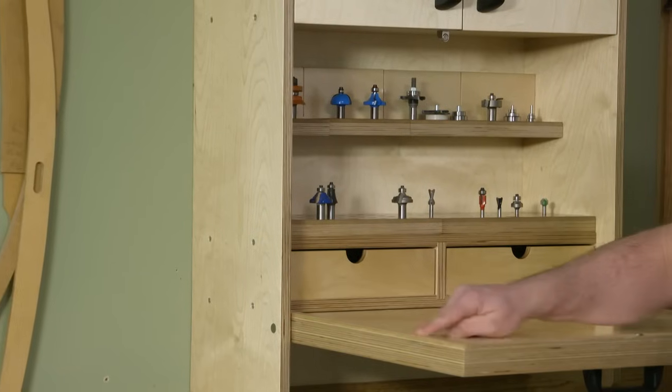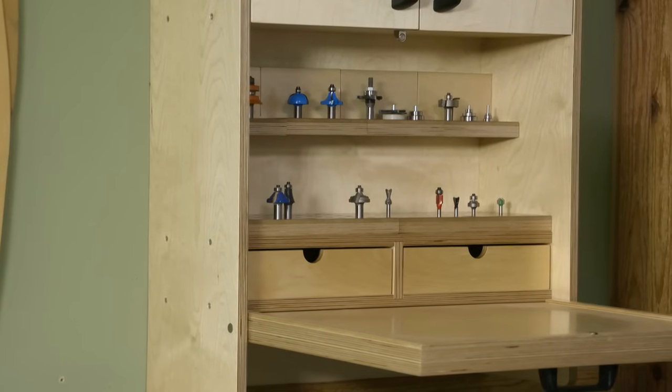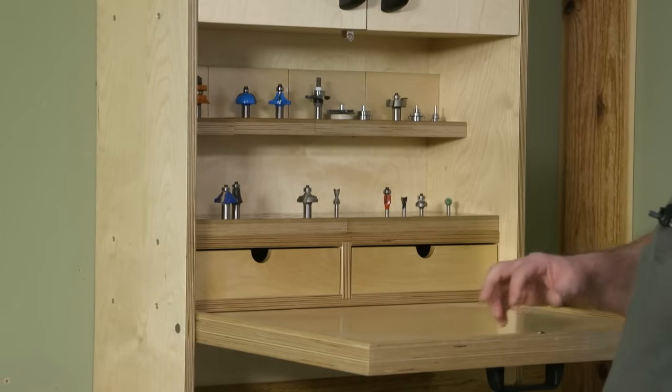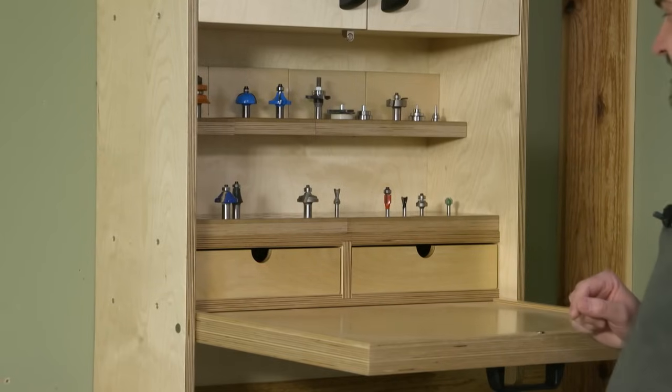It's really nice to have this work surface. As you can see, we have a lip around this—just a quarter inch piece of plywood glued on there—just to keep anything from rolling off the edges and onto the floor. Keep everything right here and safe.